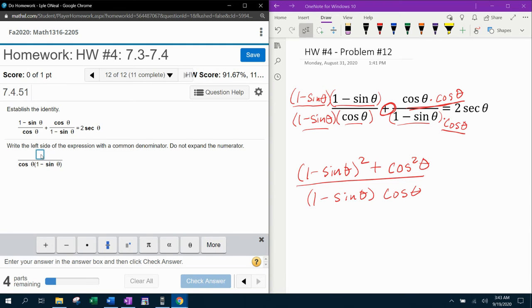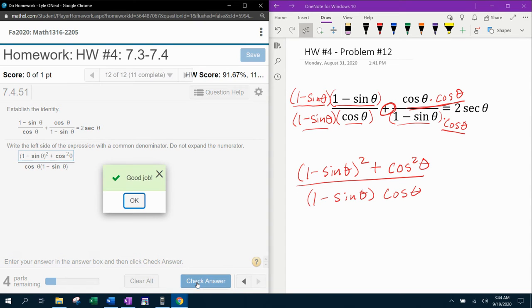And so the only way to know for sure is to input that and see if that's what they want. So here we go. We've got a parenthesis, one minus sine theta quantity squared plus cosine squared theta. Hey, that was what they wanted. Yay.